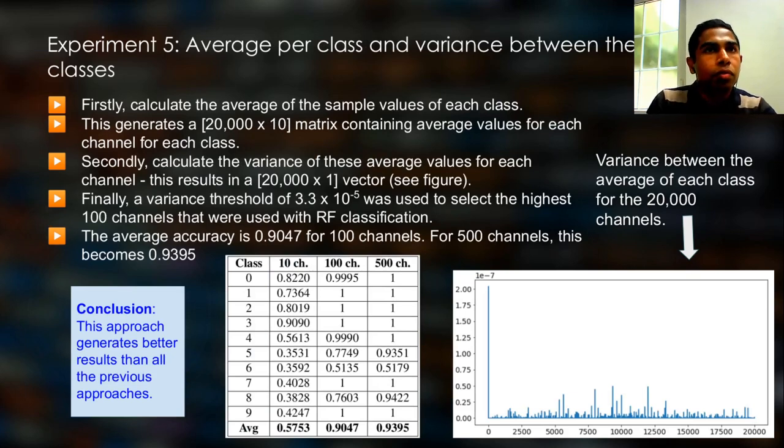However, building on top of those experiments, in our fifth experiment, we combined the two together. Here, we calculate the average value of each channel per class initially, and then calculate the variance of these average values across classes. This means we no longer look at the variance or the average of individual EM data samples, but the variance of averages. As you can see from this figure right here, we have more peaks for the variances among 20,000 channels now. This is an encouraging figure.